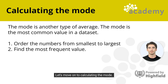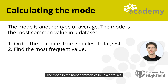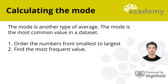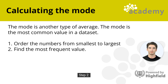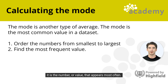Let's move on to calculating the mode. The mode is another type of average — it is the most common value in a data set. An easy way to remember this is that mode sounds like 'most.' The mode can be calculated in two steps. Step 1: order the numbers. Step 2: find the most frequent value. When finding the mode, remember the answer is not the largest number; it is the number that appears most often.